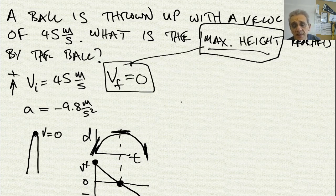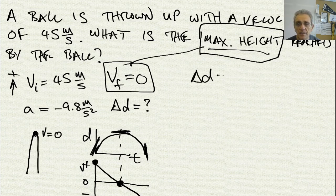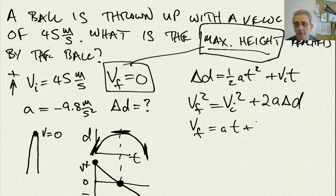The other thing I'm going to write down is what am I looking for. It says 'what is the max height reached,' so I am looking for delta D. Now that I have my information written down, I can analyze my equations for constant acceleration: delta D equals one-half at squared plus vi t; v final squared equals v initial squared plus 2a delta D; and v final equals at plus vi.